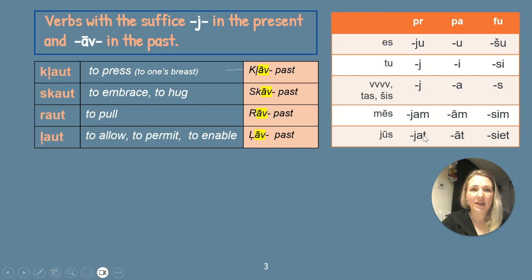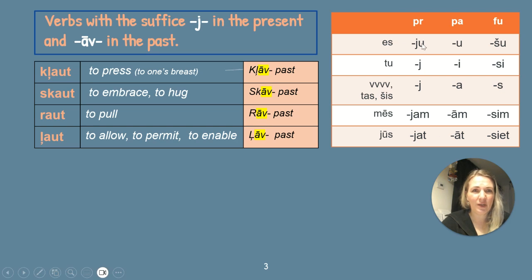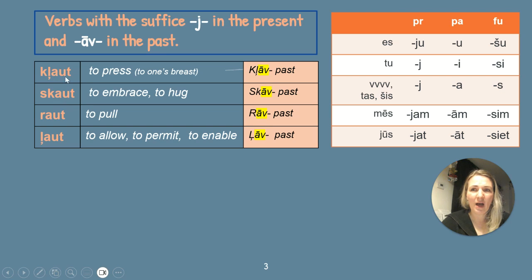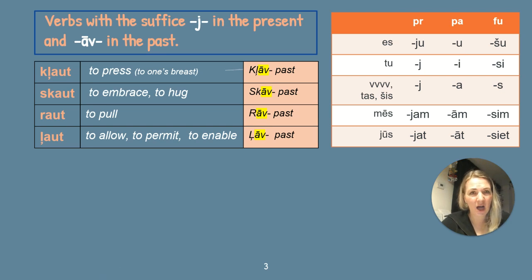Jūs klauʒat, skauʒat, rauʒat, ļauʒat — these endings we already know. In the past, the -au- changes to -āv-: es klāvu, skāvu, rāvu, ļāvu. Tu klāvi, skāvi, rāvi, ļāvi. Viņš, viņa, viņas, tas, šis: kļāva, skāva, rāva, ļāva.